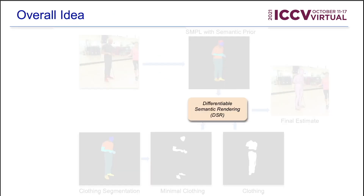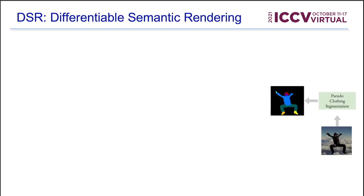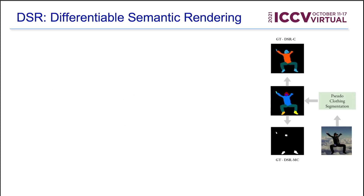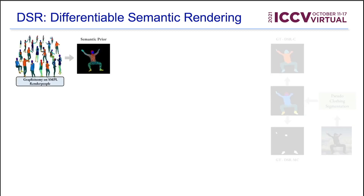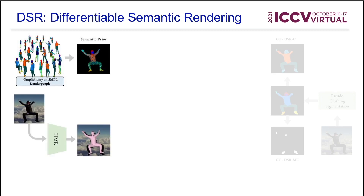Given an image, we obtain the clothing segmentation, which is divided into DSRC and DSRMC. Using scanned human models from Render People, we obtain the SMPL semantic prior. We use a network similar to HMR to get an initial estimate, and use a soft rasterizer as the differentiable renderer, in which we use the semantic prior as the texture and the initial SMPL estimate as the mesh.